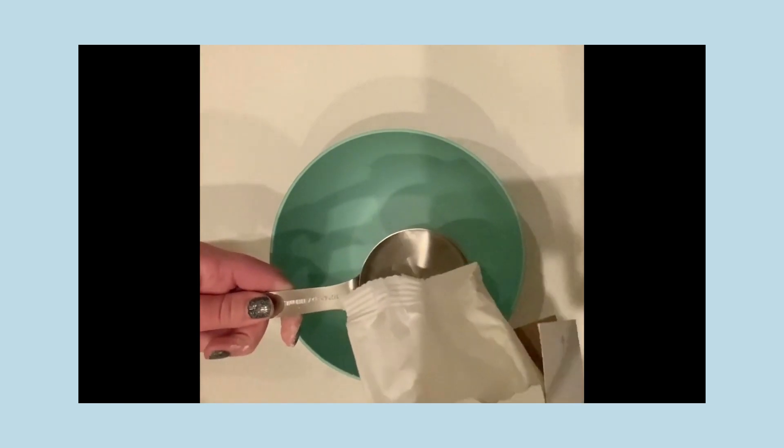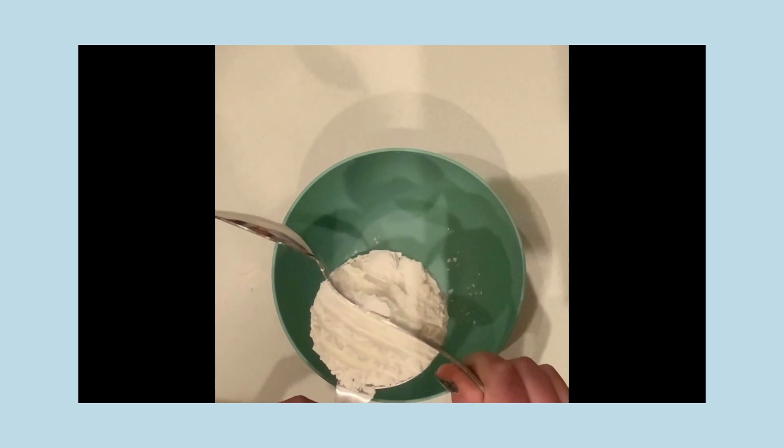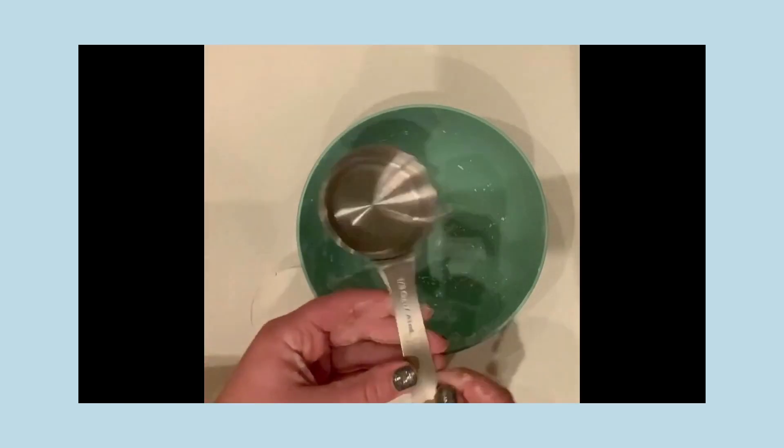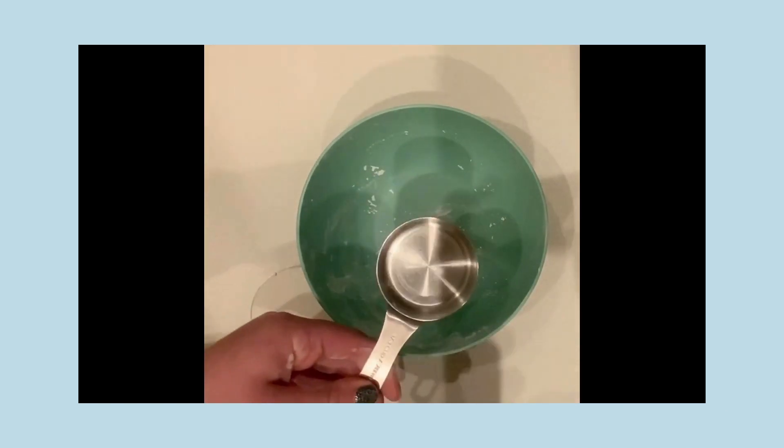Our first step is to measure out the cornstarch. We figured that it should be 1 half cup if we're doubling the recipe. Make sure to tap off the excess so you get a good measurement. I made sure to dump out the excess cornstarch and put the measured part aside.